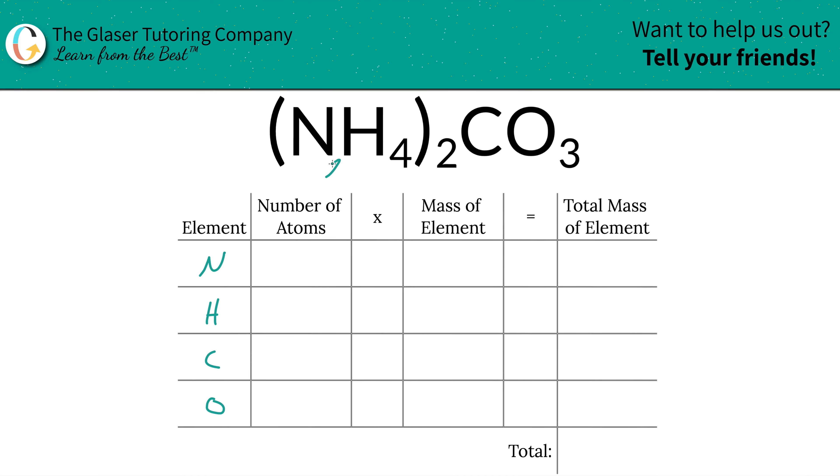Then we're going to write the number of atoms of each, and that's where the subscripts come into play. Now if you don't see a subscript at the bottom of an element, simply write in a 1 there, because that's what it is assumed to be.